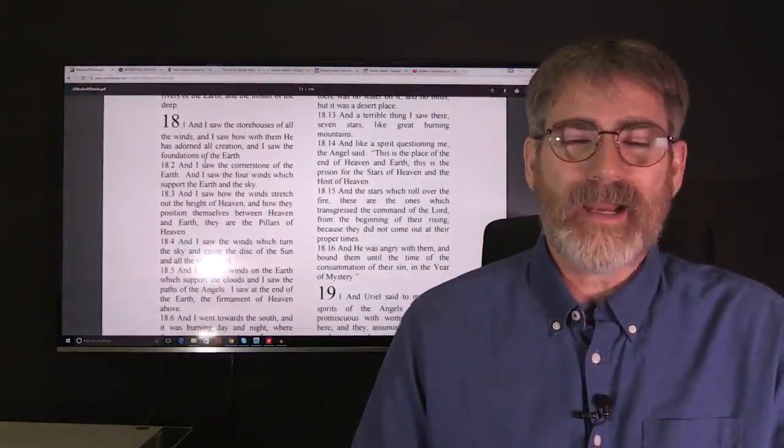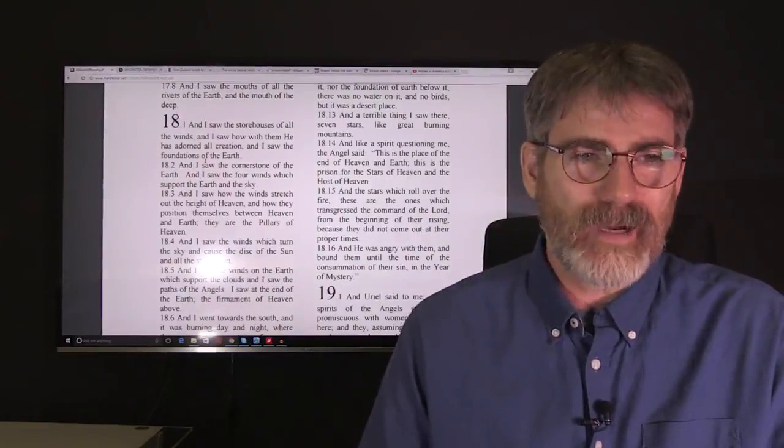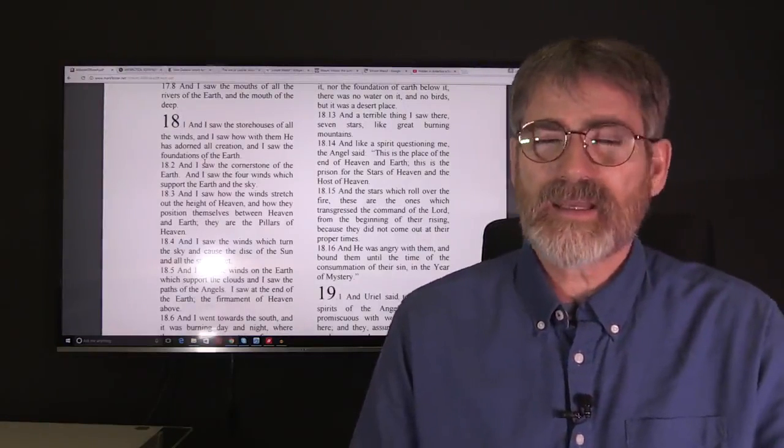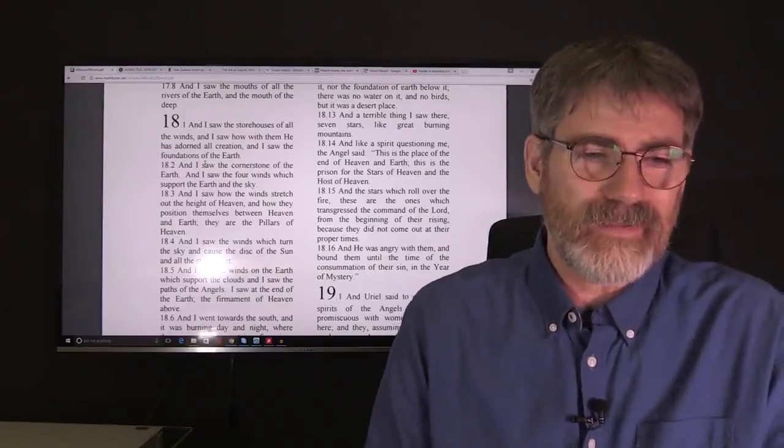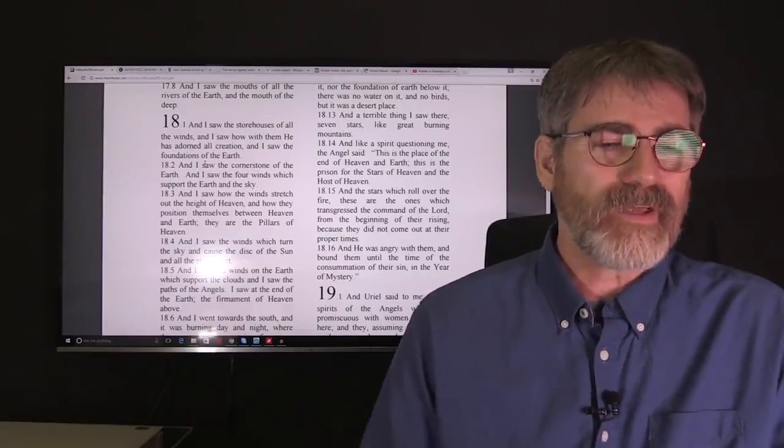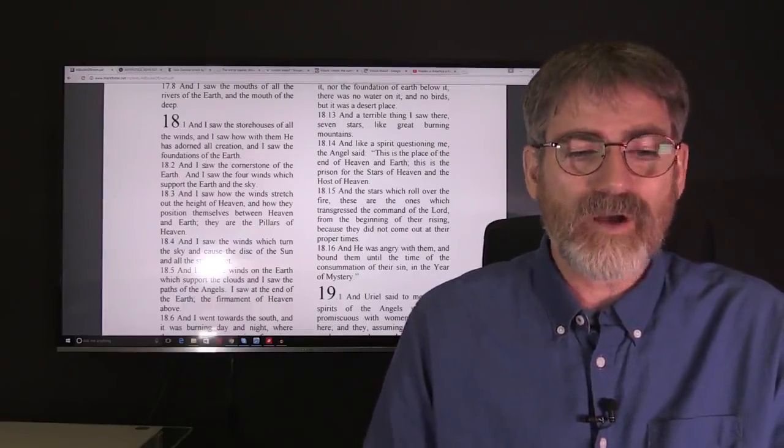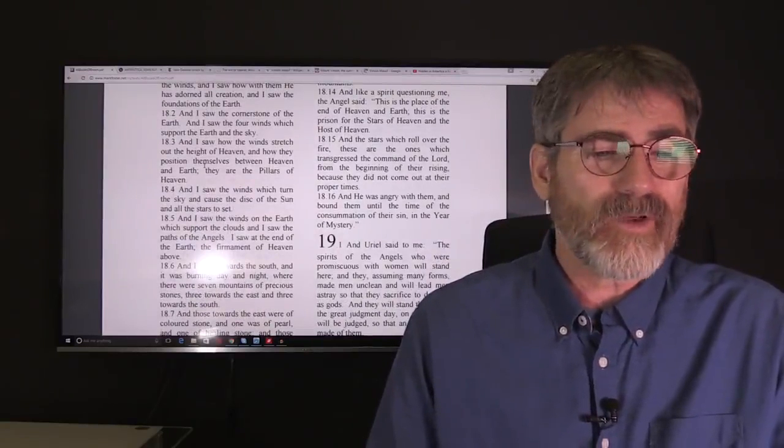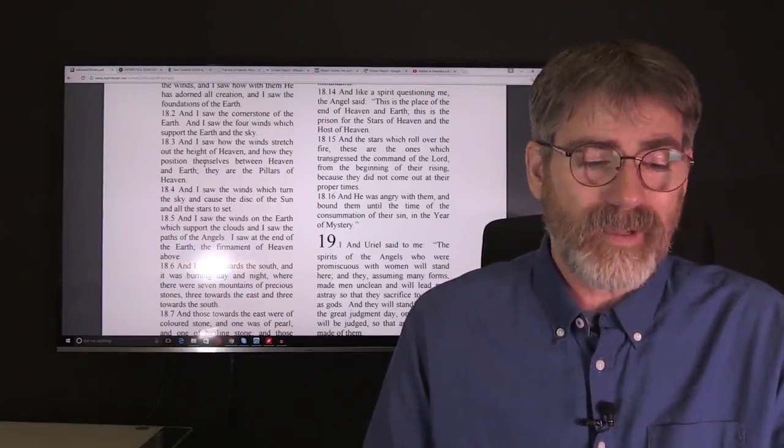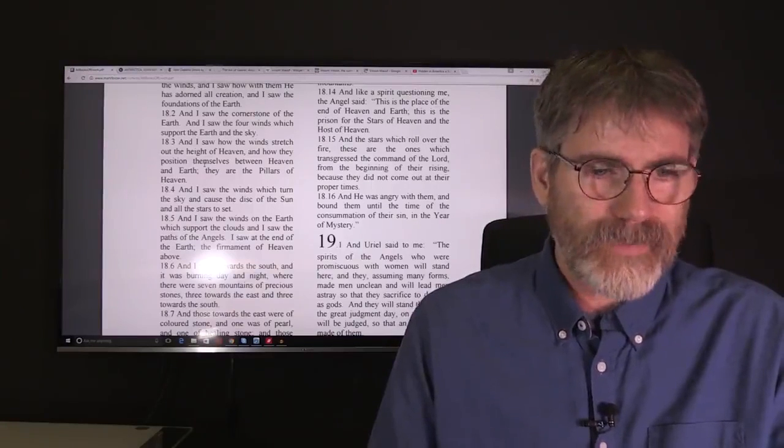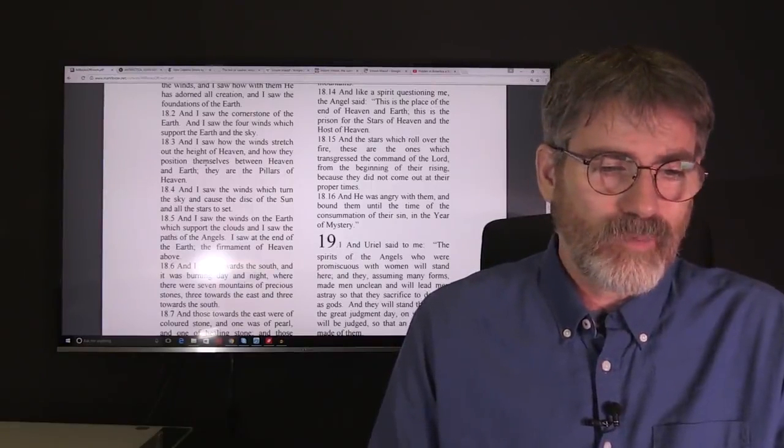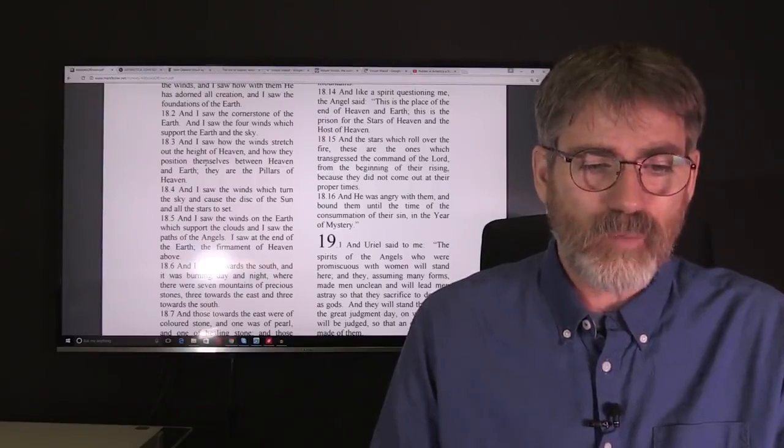As you can see on your screen now, this is the book of Enoch. I was reading in the first book of Enoch, chapter 18. And this is where the angel Uriel is taking Enoch and showing him some very interesting things. And I'm going to share with you some of the words that I read here in Enoch. And then you'll see why it became very interesting to me. If we go down to say verse four and begin there, it says, And I saw the winds which turned the sky and caused the disk of the sun and all the stars to set. And I saw the winds on the earth which support the clouds. And I saw the path of the angels. I saw at the end of the earth the firmament of heaven above. And I went towards the south. Okay, so he goes to the end of the earth. And he speaks about going towards the south.